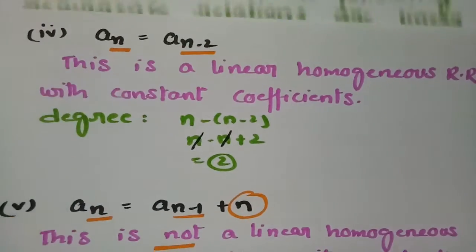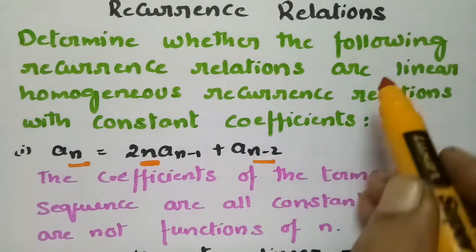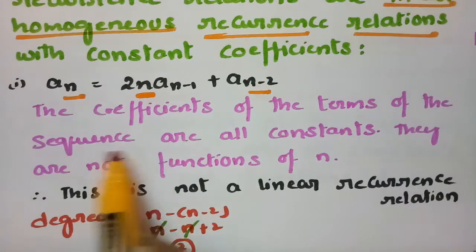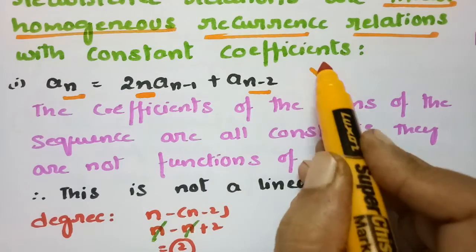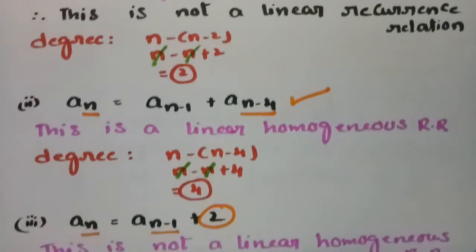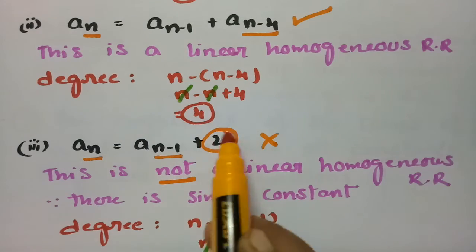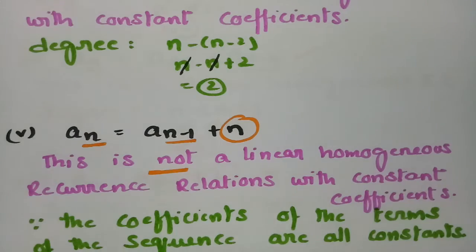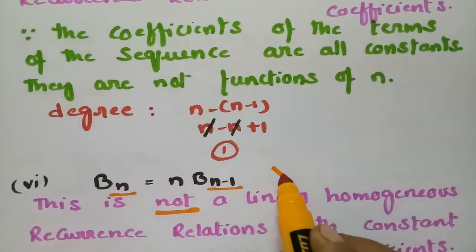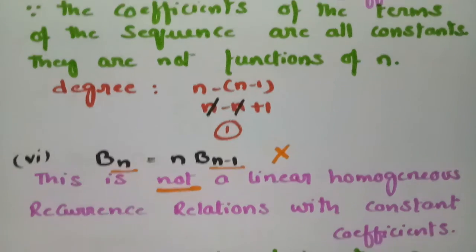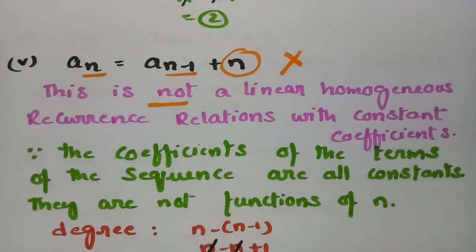In summary, for these examples: the first is not a linear homogeneous recurrence relation since the coefficient is a function of n; the second is a linear homogeneous recurrence relation; the third is not since it contains a standalone constant; the fourth is a linear homogeneous recurrence relation; and the last is not, since its coefficient is a function of n. This is how we identify whether a relation is a linear homogeneous recurrence relation with constant coefficients.